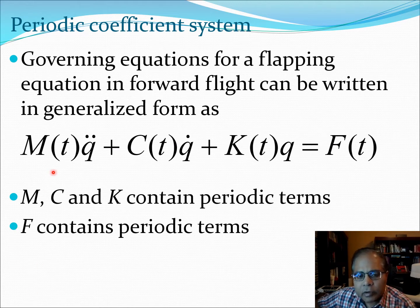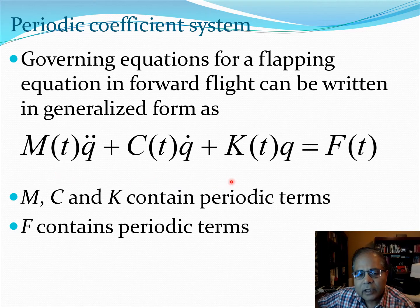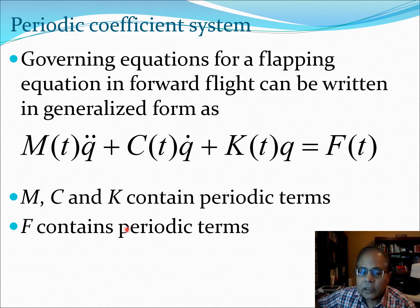So let's recall from our previous lectures the nature of the differential equation. Essentially we have the equation M Q double dot plus C Q dot plus K Q equals F. Now what is interesting about this equation is that M, C and K are also functions of time and in general M, C and K contain periodic terms. That's something which is very interesting for many rotor dynamics problems, especially the helicopter problem in forward flight.